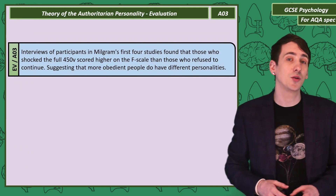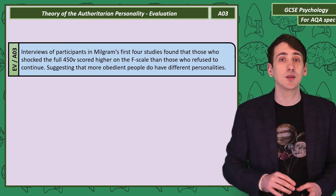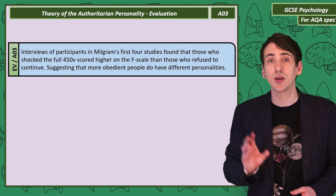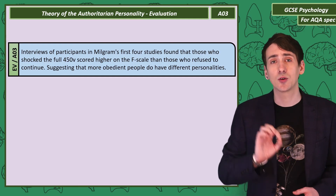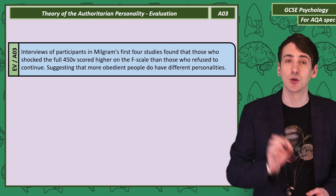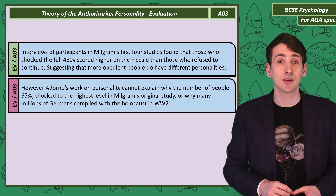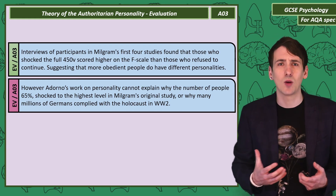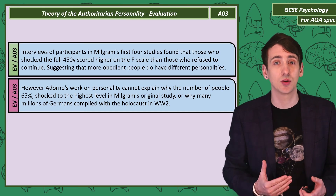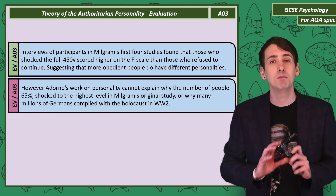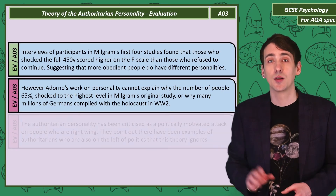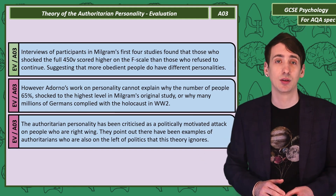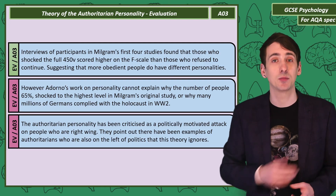In evaluating Adorno's theory of the authoritarian personality, we can support it with research: interviews with participants in Milgram's first four studies showed that those who gave shocks to the full 450 volts scored higher on the F scale than those who refused to continue. However, Adorno's suggestion that the authoritarian personality is a personality type similar to a mental health condition struggles to explain why so many people complied — why 65% gave the full shocks in Milgram's study, or why millions complied with the Holocaust. The authoritarian personality is effectively a criticism of people on the extreme right wing of politics, and opponents point out there have been authoritarians on the left of politics too.